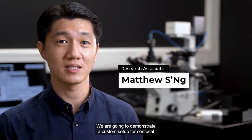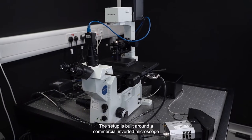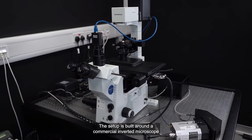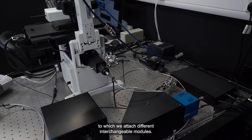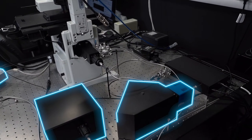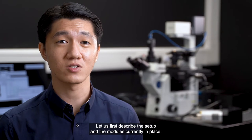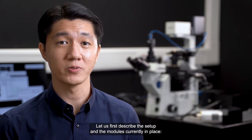We are going to demonstrate a custom setup for confocal microspectroscopy of Raman and Brillouin scattering. The setup is built around a commercial inverted microscope to which we attach different interchangeable modules. Let us first describe the setup and the modules currently in place.